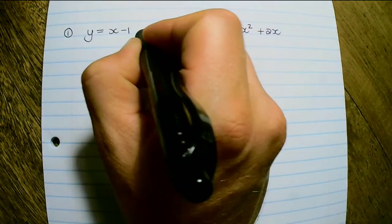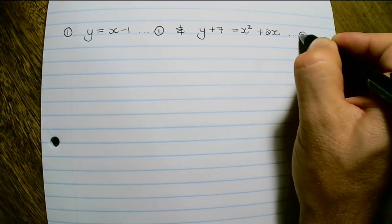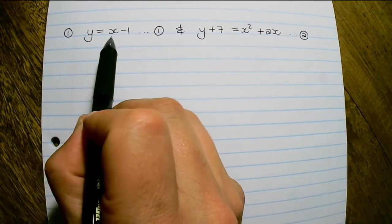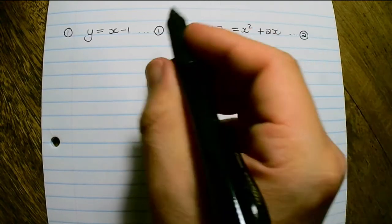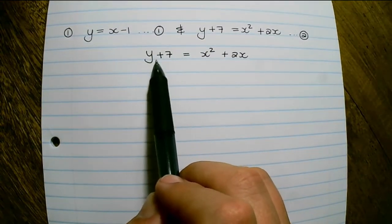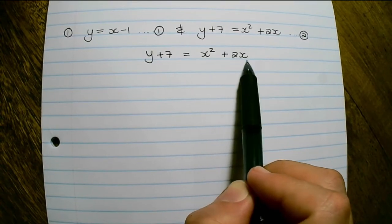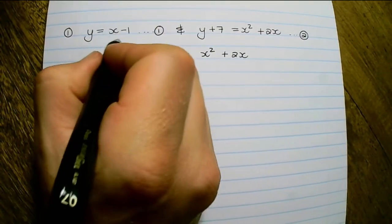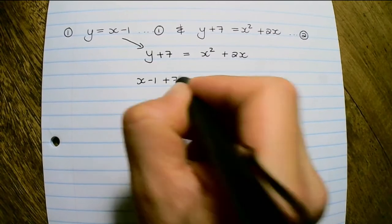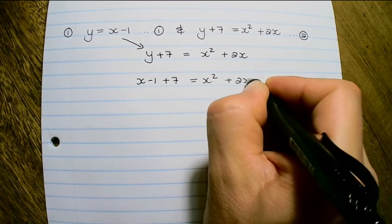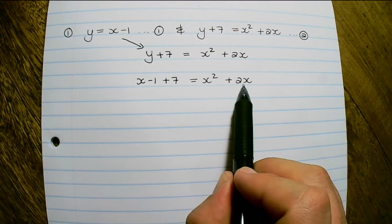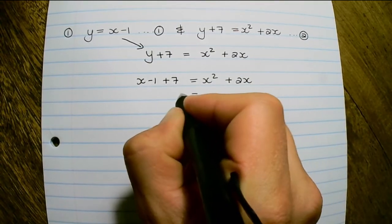First, what we normally do is number the equations. I can see that I can substitute y with x minus 1 in the second equation. So here we have y plus 7 equals x squared plus 2x, but y equals x minus 1, so let me substitute y. Now I have an equation that only consists of numbers and x's, and I can rewrite this in standard form in order to solve x.